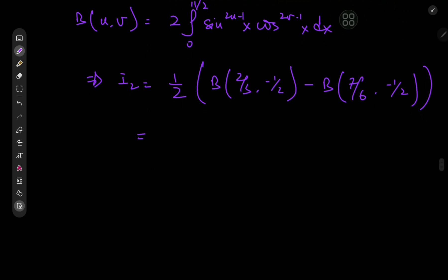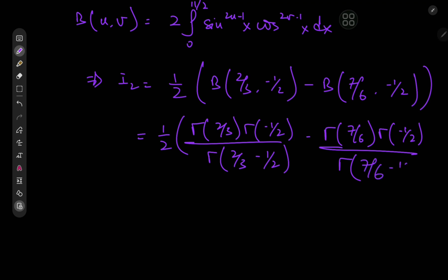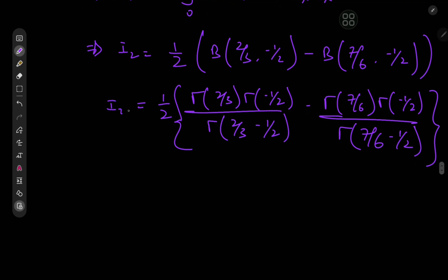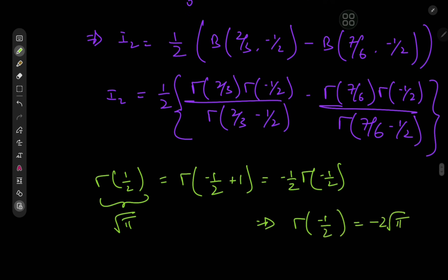Now we expand the beta function in terms of the gamma function: β(u,v) = Γ(u)Γ(v)/Γ(u+v). We need γ(-1/2). Recall that Γ(1/2) = Γ(-1/2 + 1), and by the recursion formula, that equals (-1/2) · Γ(-1/2). Since Γ(1/2) = √π, this implies Γ(-1/2) = -2√π. That factor can be pulled out.